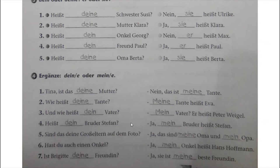Heißt dein Bruder Stefan? Ja, mein Bruder heißt Stefan. Sind das deine Großeltern auf dem Foto? That means: Are they your grandparents in the photo? Ja, das sind meine Oma und mein Opa. Hast du auch einen Onkel? Ja, mein Onkel heißt Hans Hoffmann. Nummer 7: Ist Brigitte deine Freundin? Ja, sie ist meine beste Freundin.